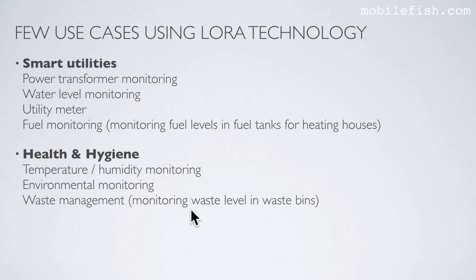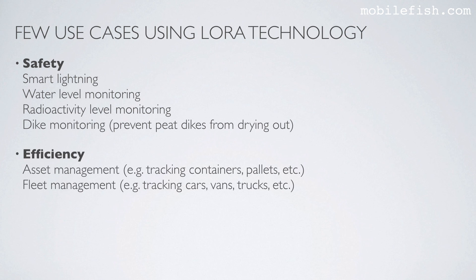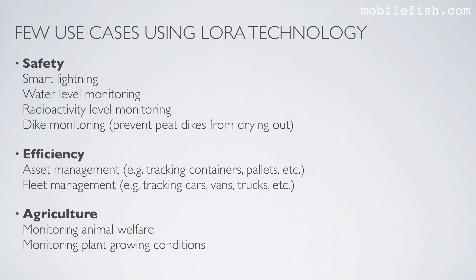Waste management means monitoring waste levels in waste bins. In the category safety: smart lighting, water level monitoring, radioactivity level monitoring, and dike monitoring — for example, to prevent peat dikes from drying out, which can be applied in the Netherlands where there are many peat dikes. In the category efficiency: asset management and fleet management, for example tracking cars, vans, and trucks. And in the last category, agriculture: monitoring animal welfare and monitoring plant growing conditions.